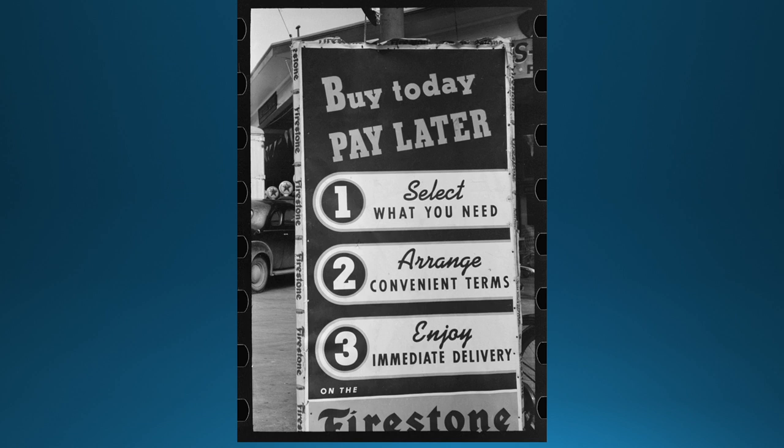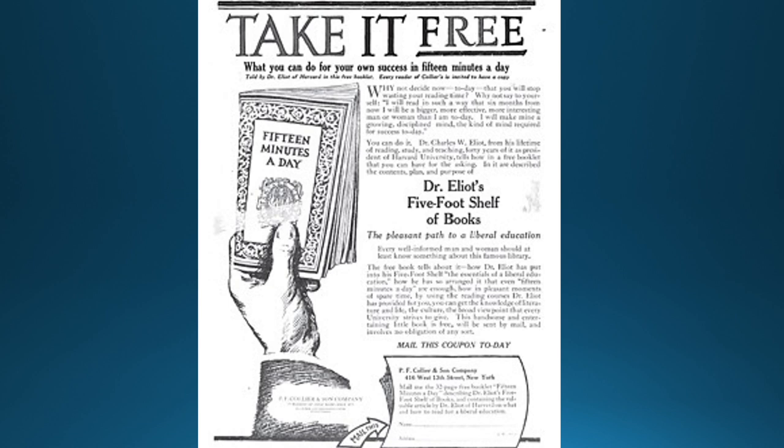A Firestone Tires advertisement really epitomizes what buying on credit is about: 'Buy today, pay later, select what you need, arrange convenient terms, enjoy immediate delivery.' This became common for so many items — cars, tires, any appliance. Even a vacuum cleaner advertisement shows '$4 down, $4 a month' — showing that even everyday items were bought on credit.